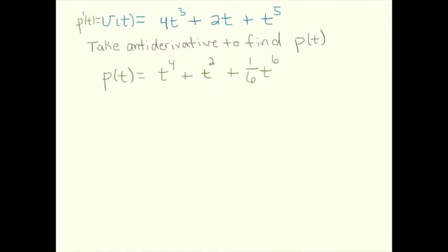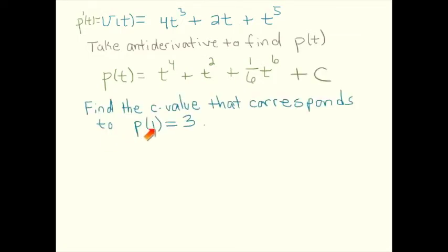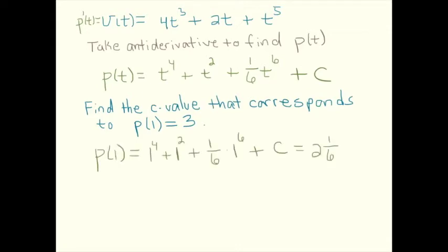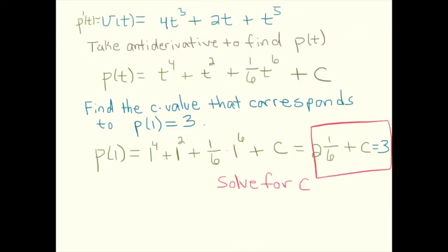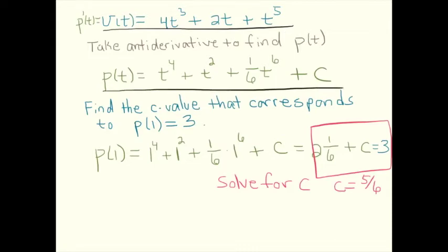This position function works, but adding plus 1, plus 2, plus 200, or any constant value will give the same derivative, since the derivative of any constant is 0. We represent this by writing plus C. Suppose we knew that the position at time t equals 1 is equal to 3. Not all C values would work. Plugging in 1, I get 2 and 1/6 plus C, and I need that to equal 3. Solving this equation, subtracting 2 and 1/6 from both sides, I get C equals 5/6.